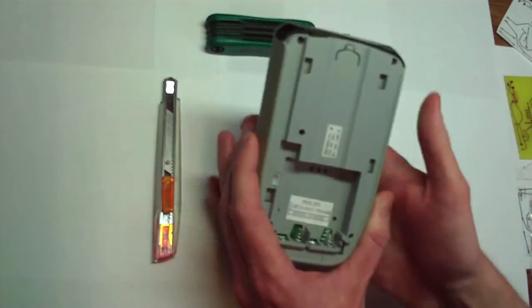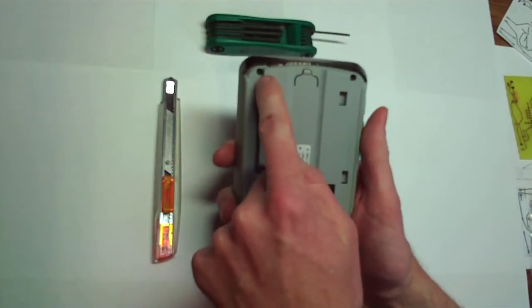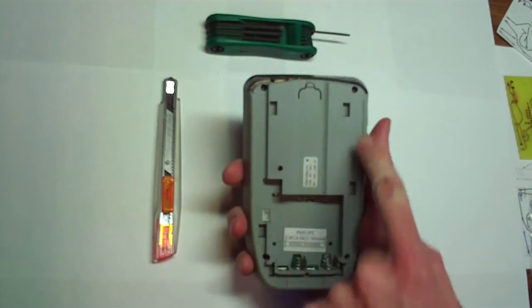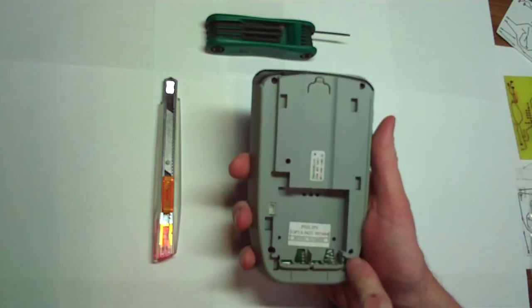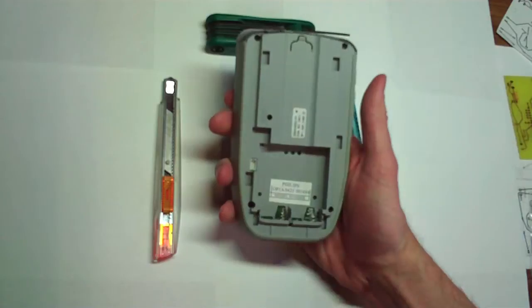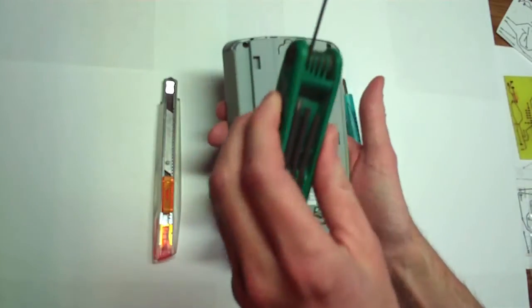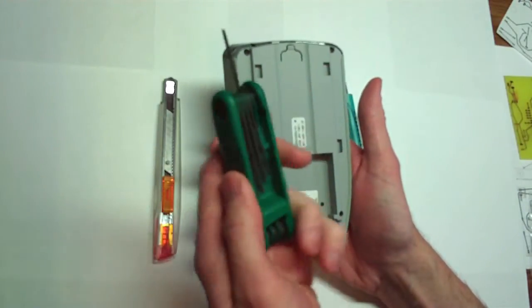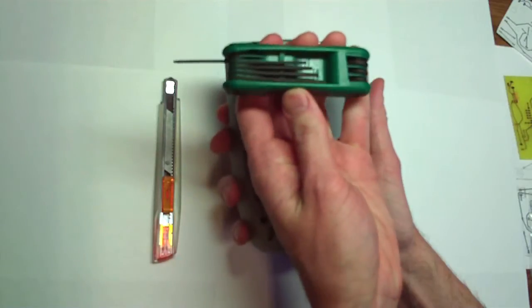Now there are a few screws we have to take off. There's one here, one here, one here, and one here. So let's do that with our, again it's a T6, it's a T6 wrench.